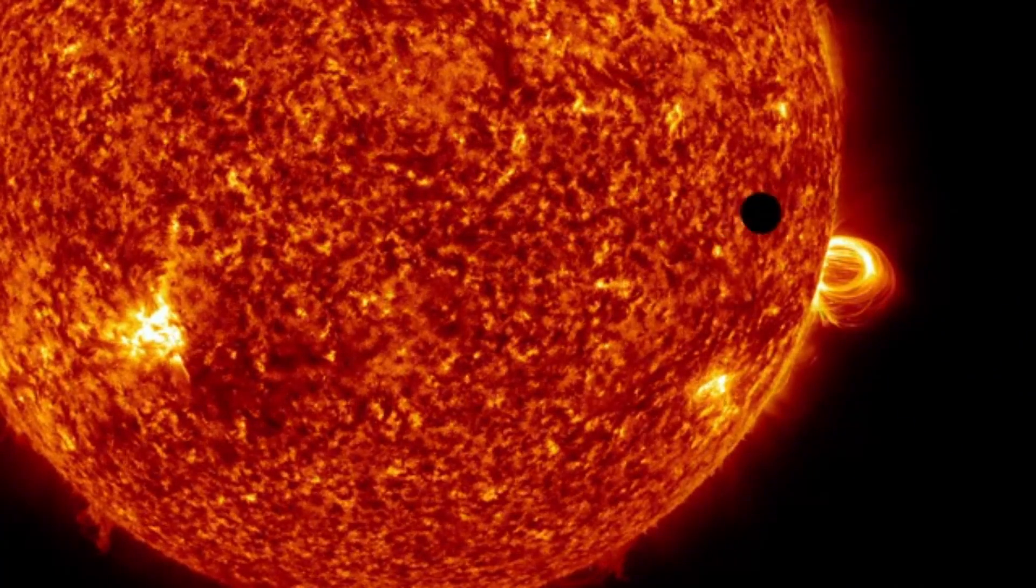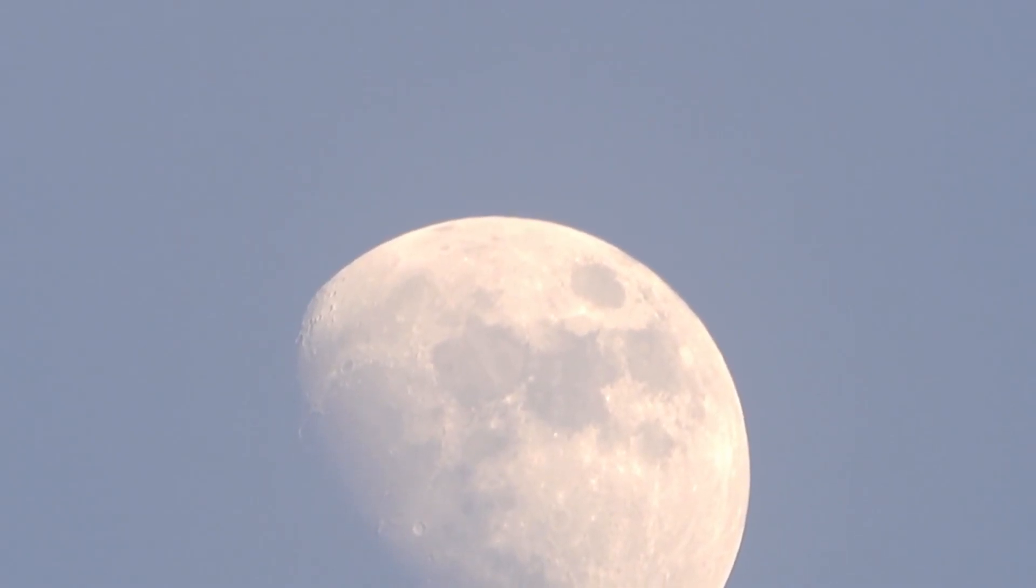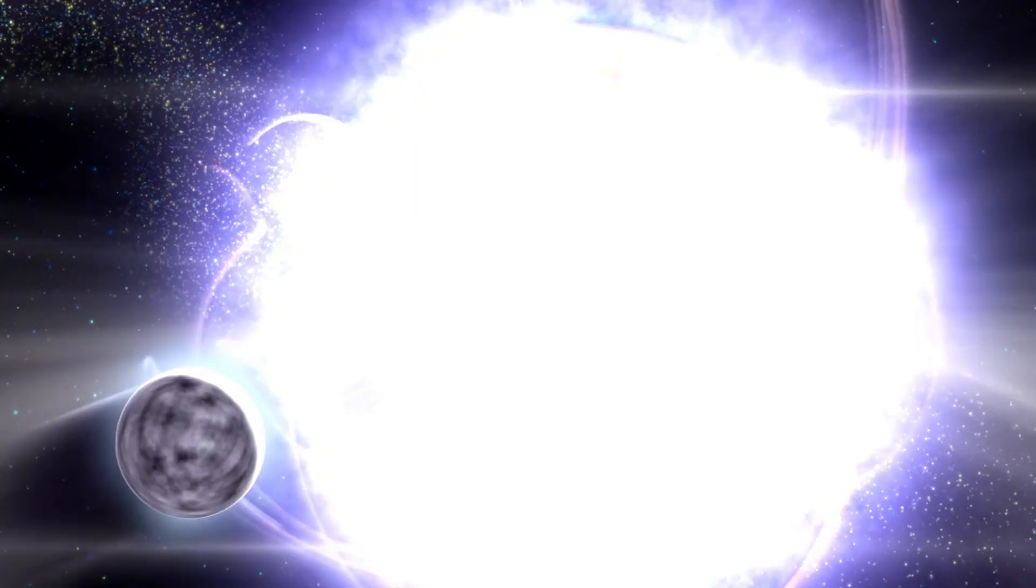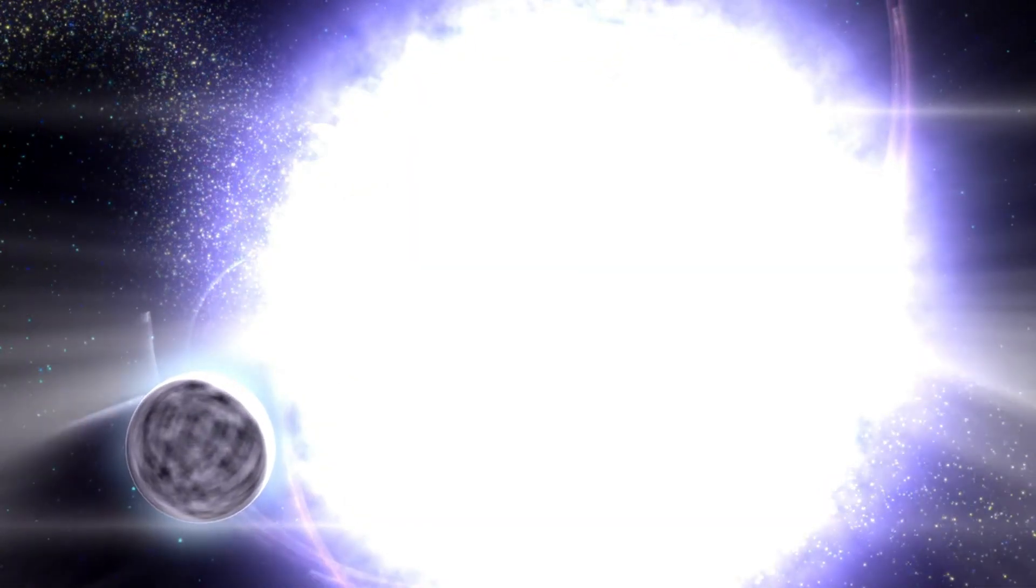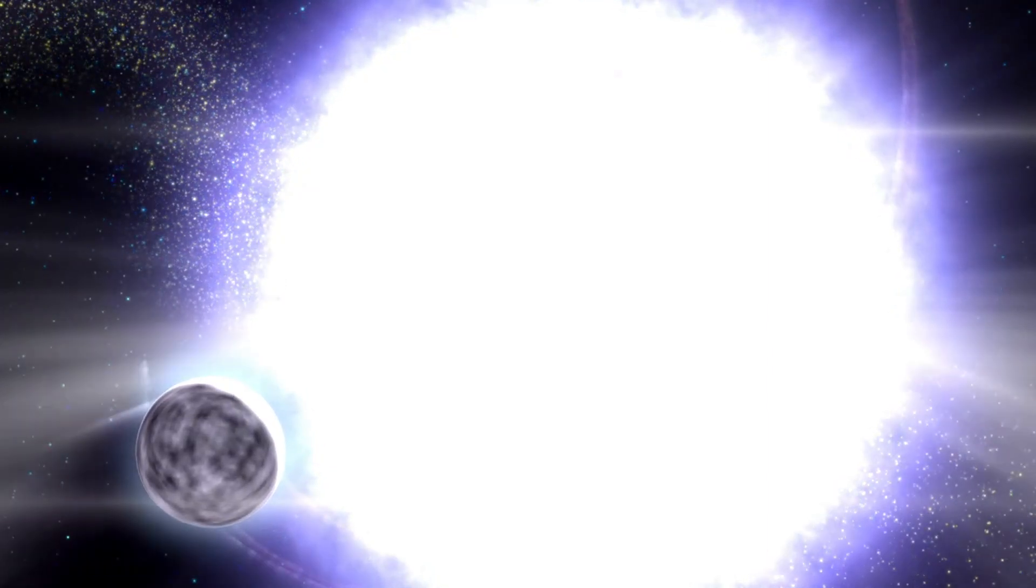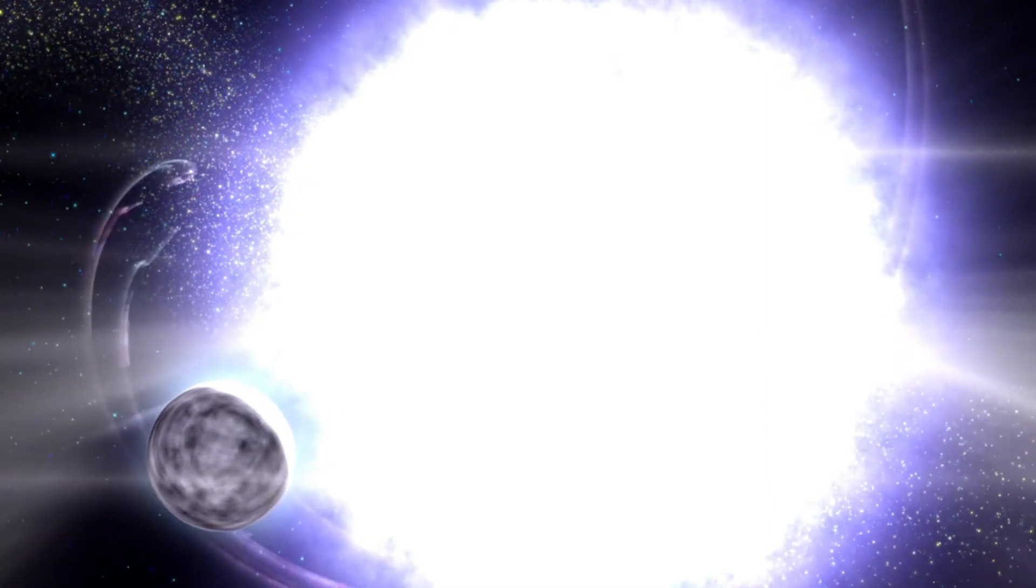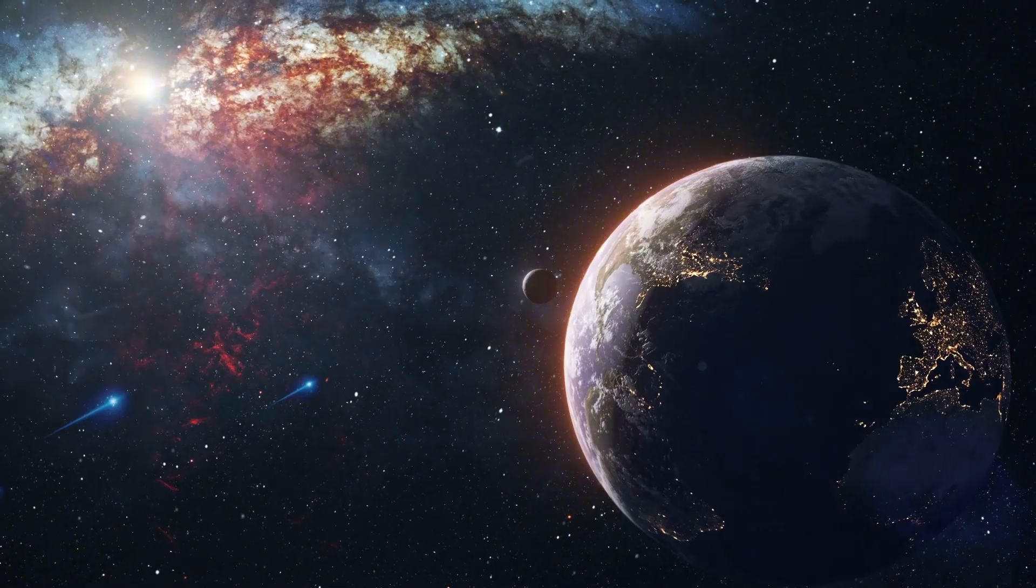One type of exoplanet that has caught the attention of space experts is the gas giant. These planets are similar in composition to Jupiter and Saturn, but are much larger. Some of these behemoths have been dubbed super-Jupiters, surpassing even the largest planet in our solar system. But that's not all.